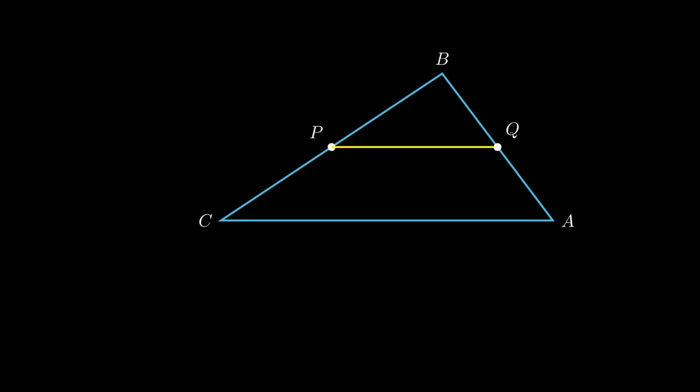To show segment PQ is parallel to side AC and length of segment PQ is half of side AC, we need to extend segment PQ to point R such that segment QR is equal to segment PQ.